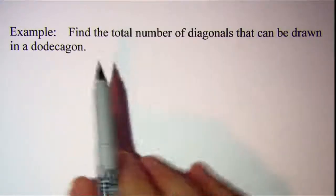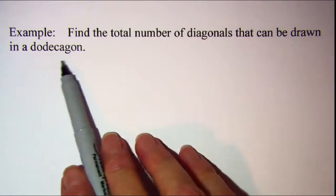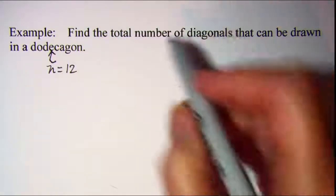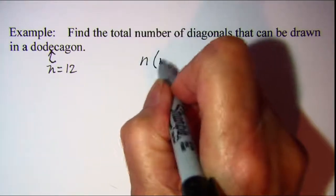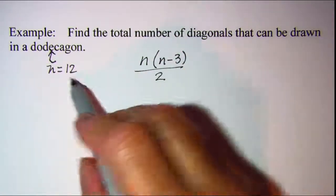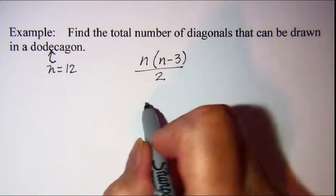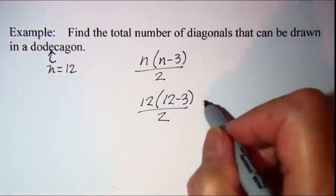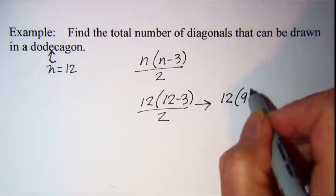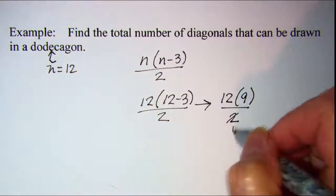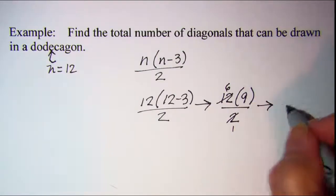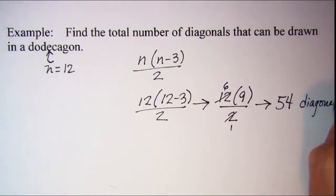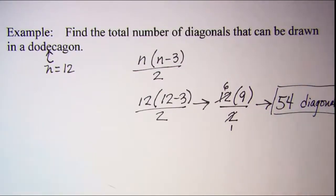Let's use that formula to find the total number of diagonals in a dodecagon. A dodecagon has twelve sides, so n equals 12. Plugging in: diagonals equals 12 times (12 minus 3) divided by 2, which is 12 times 9 divided by 2. Simplifying, we get 6 times 9, which is 54 diagonals.